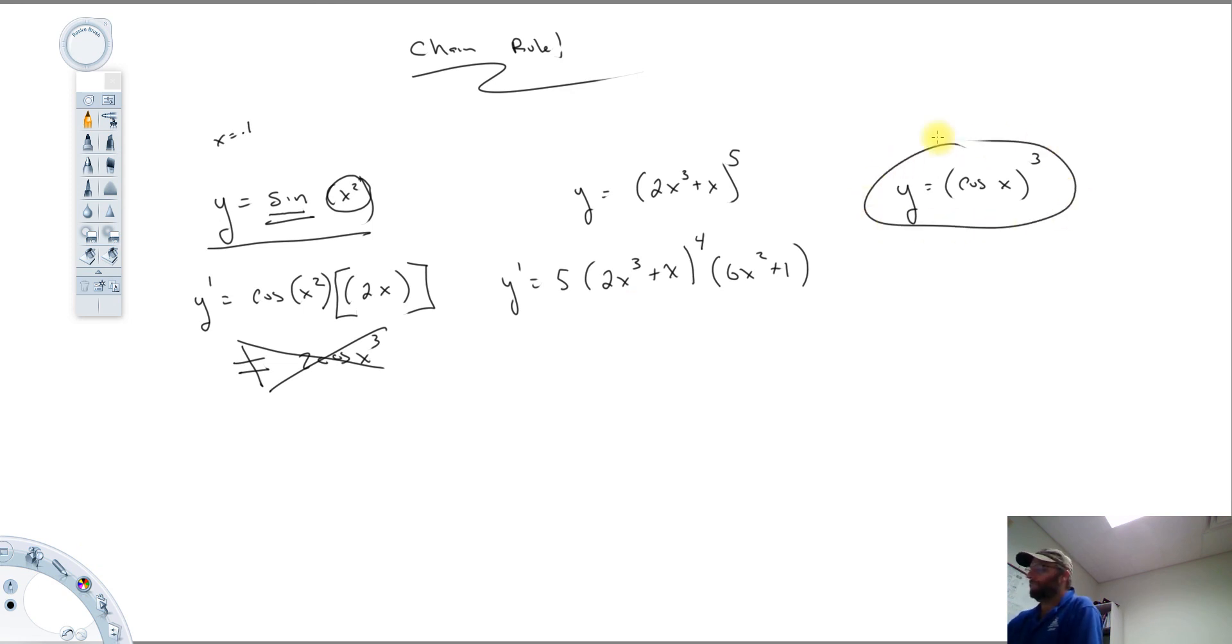All right. Let's take a look at this third example, this animal here. And we need to recognize the different functions. One of them is the cosine function. That's our inner function, cosine x. And then the other one is this third power here. So when we differentiate this, differentiate the third power function first, that's going to be 3 times cosine x, second power. Now we differentiate the inside function. Cosine x is minus sine x.